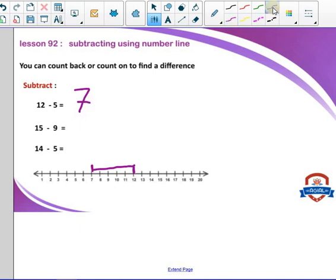15 minus 9. We start with 15 and we count back 9. We have here 1, 2, 3, 4, 5, 6, 7, 8, 9. So the result here will be 6. So we have here 15 minus 9 equals 6.